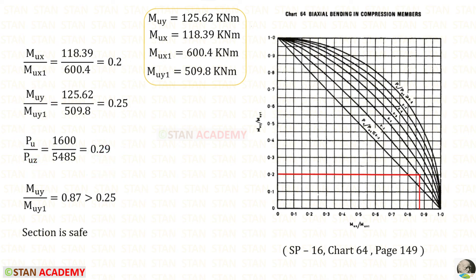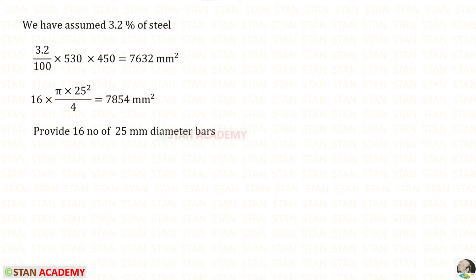Now, we have to take the chart number 64. For this, we have got 0.2. From 0.2, we have to make a horizontal line. PU upon PUZ is 0.29. This line represents 0.3. We can approximately keep 0.29 as 0.3. So, this line should be extended up to this line. Then, we have to make a vertical line. This is for MUY upon MUY1. For that, we will get approximately 0.87. From the calculation, we have got 0.25. Since it is more than this, the section will be safe. That means the assumed area of the steel is enough. The section is safe.